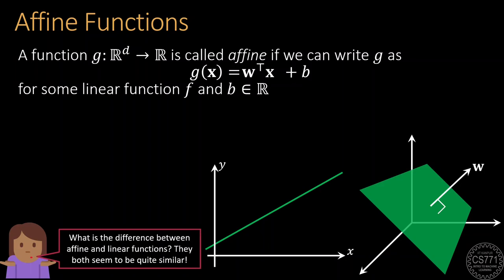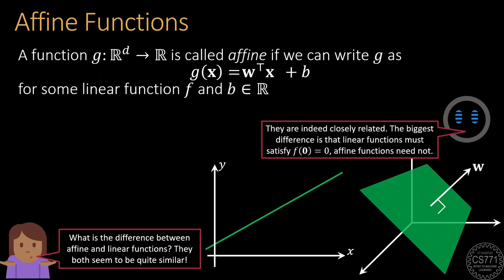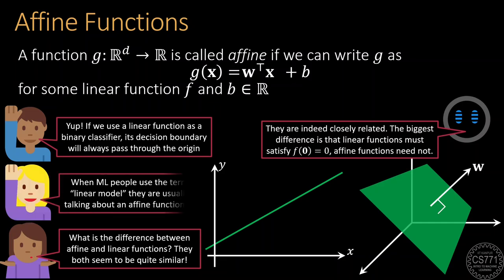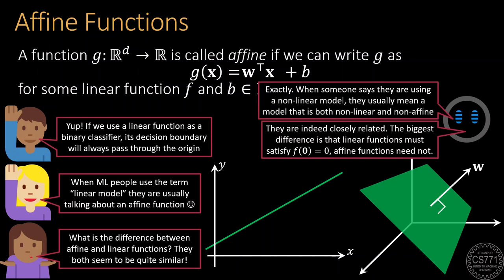It is natural to get a bit confused with this terminology. The biggest difference between linear and affine functions is that the former do not have bias terms whereas the latter can have bias terms. Consequently, if we build a binary classifier out of a linear function, its decision boundary must pass through the origin. ML folks are fairly careless about using the terms linear and affine interchangeably. In fact, when someone uses the term linear model in the context of machine learning, most often they are talking about an affine function instead.